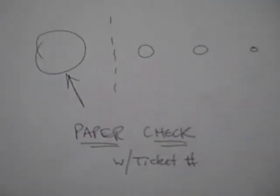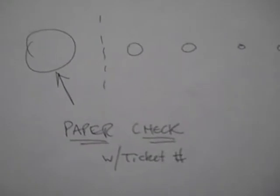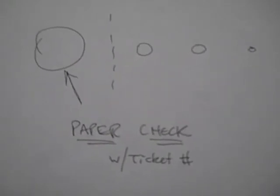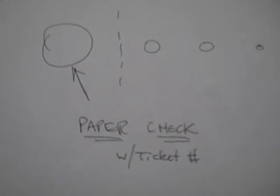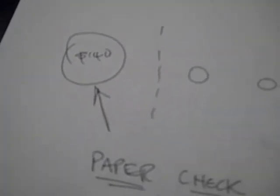Now a lot of people are like, paper checks are totally antiquated. Well, a paper check is one of the only forms of contract that are available. A paper check is a paper contract. When you cash the check with the ticket number for the $140, once they cash that, now you have a paper trail.